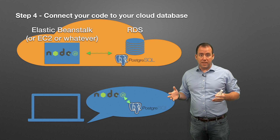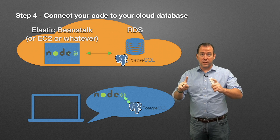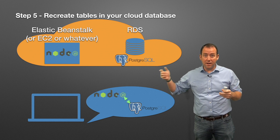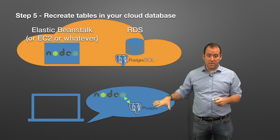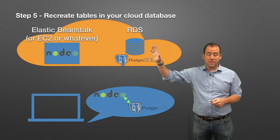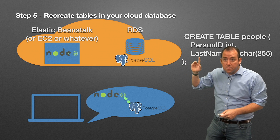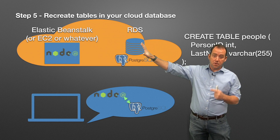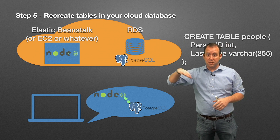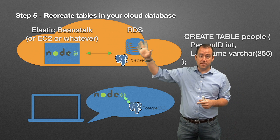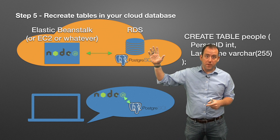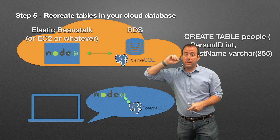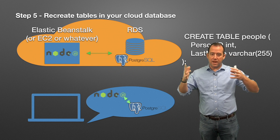Once you've done that, you've got your connection to the database — but we're still missing something: the tables. We've set up the database, but it doesn't have any tables in it, just like when we first set it up locally. So we've got to run CREATE TABLE on the remote database too. If you don't have a table there, your code will ask Postgres for data from the table 'people' and Postgres will say it's never heard of it.